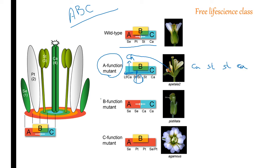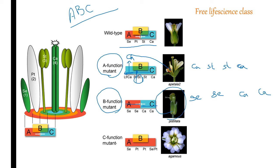In the B-function mutant, Class B is mutated, so there is no interaction of Class A with Class B, and Class C cannot interact with Class B either. In whorls one and two, Class A is expressed, and in whorls three and four, Class C is expressed. So in whorl one, sepal develops normally; in whorl two, sepal develops again instead of petal; in whorl three, carpel develops instead of stamen; and in whorl four, carpel again.